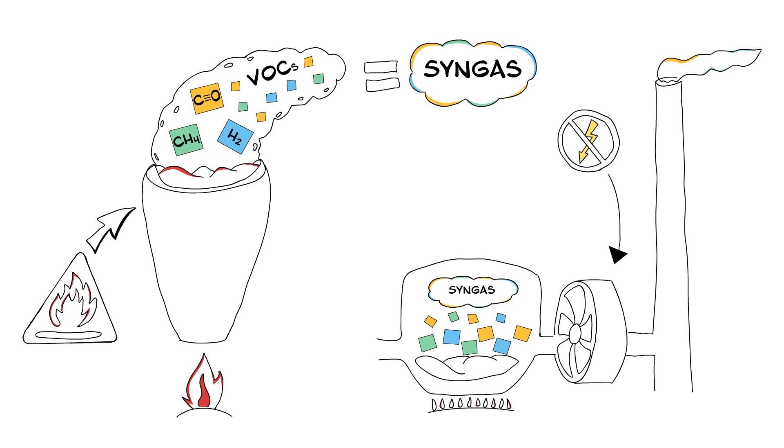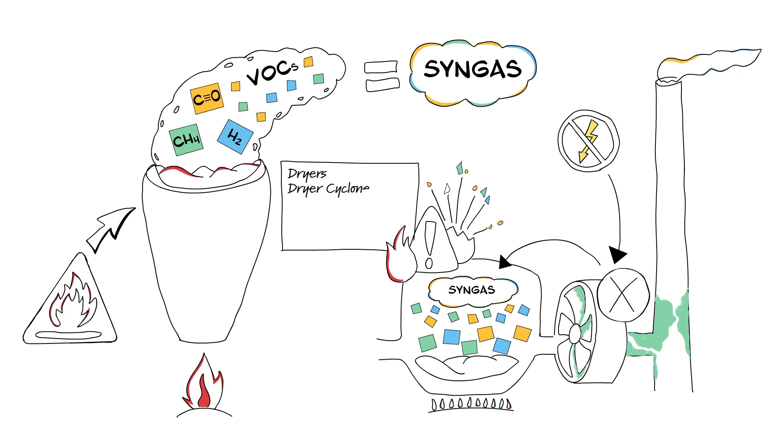Without electrical power to operate extraction fans, syngas can quickly accumulate within the system. Also, a faulty, dirty, or clogged ventilation system may prevent syngas from discharging. Accumulation of sufficient amounts of syngas poses a risk of fire or explosion in the presence of an ignition source and sufficient oxygen. This may occur in enclosed spaces such as dryers, dryer cyclones, combustion chambers, ducts, or pipes.